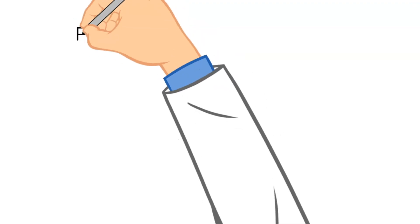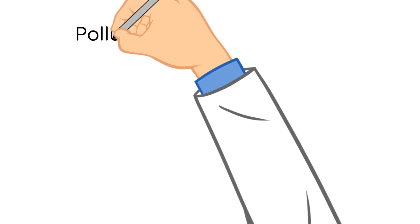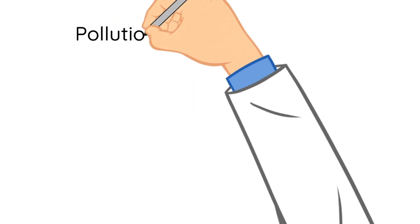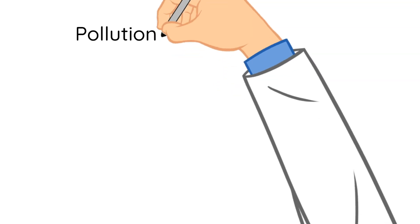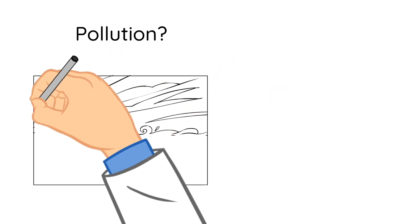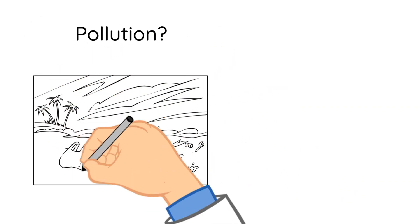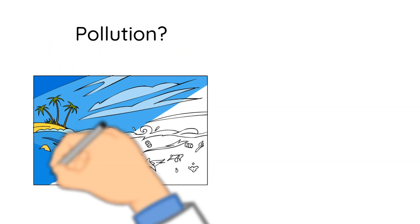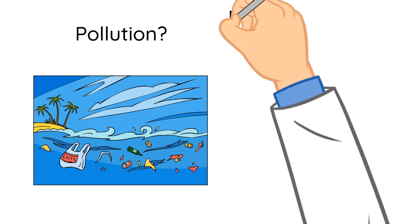Now, without further ado, let's start doodling. What is pollution? Pollution happens when the environment is contaminated or changed by waste chemicals or other substances that could harm it.